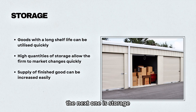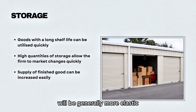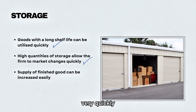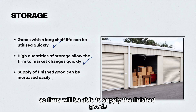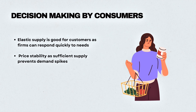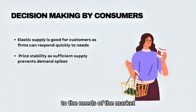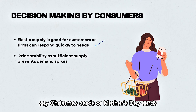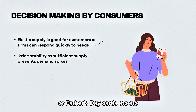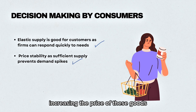The next determinant is storage. Goods that can be stored for a long period of time will generally be more elastic, and high quantities of storage allow firms to make market changes very quickly, supplying finished goods relatively easily. Having an elastic supply is good for customers, as firms can respond quickly to market needs — for example, Christmas cards, Mother's Day cards, or Father's Day cards. It also gives price stability, as sufficient supply prevents huge demand spikes increasing the price of these goods.